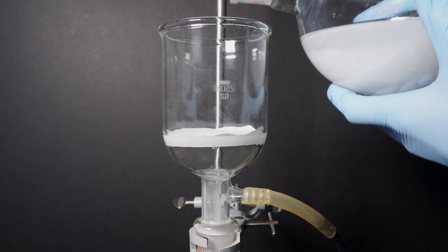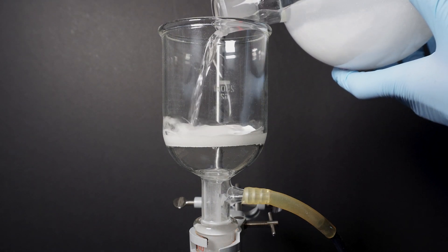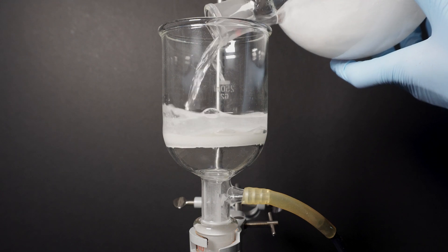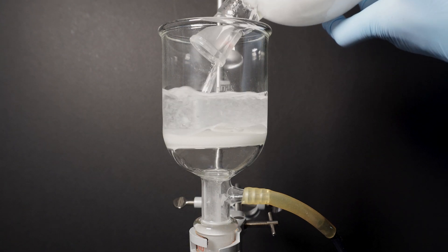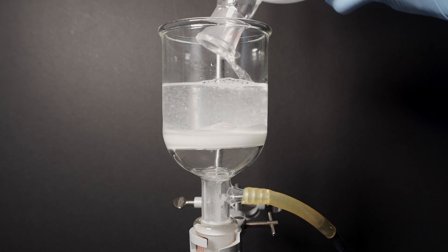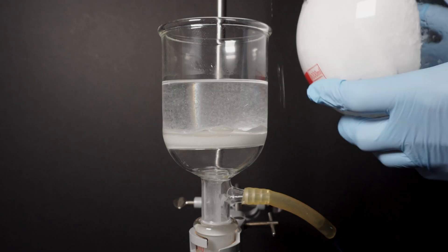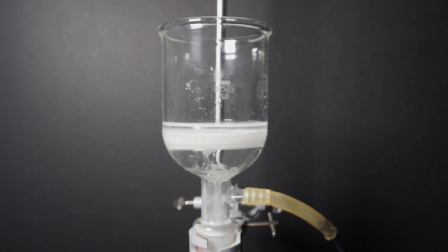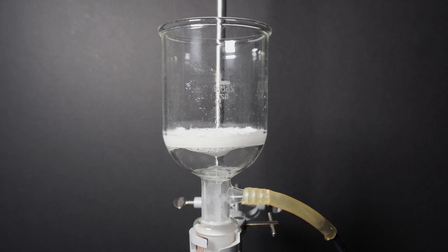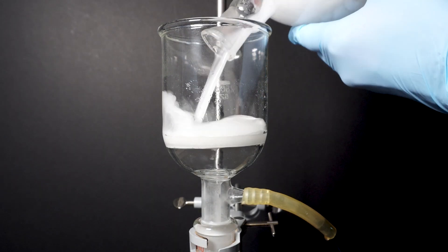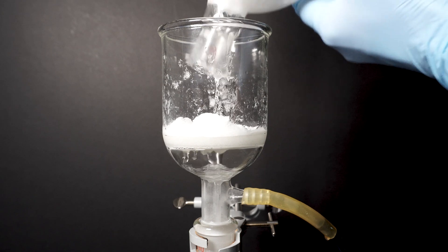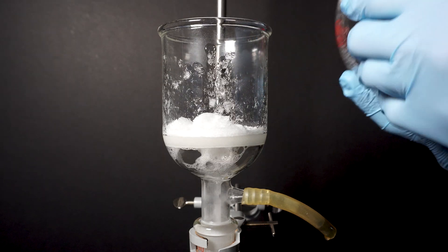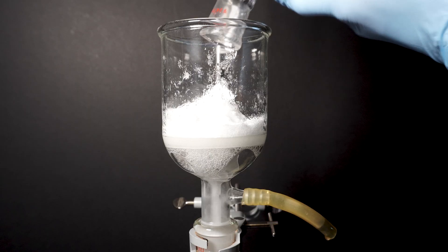Next I vacuum filter off the crystals followed by washing them three times with 250 milliliters of distilled water. This is to remove any leftover hydrochloric acid or acetic acid that still remains on the crystals. I also wash the flask two times to remove most of the crystals. I left the crystals under vacuum for something like 10 minutes before moving them to a dish to air dry for 24 hours.